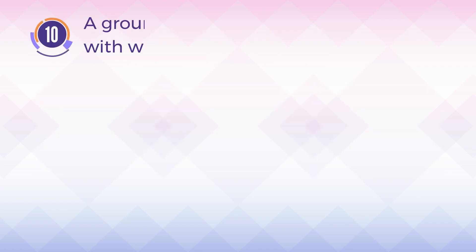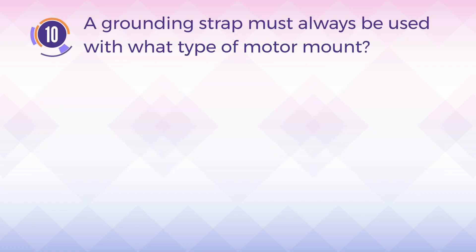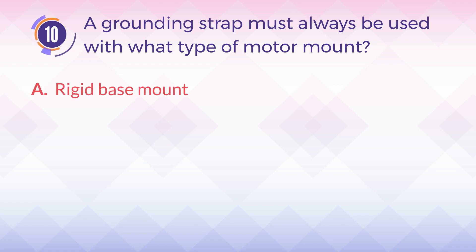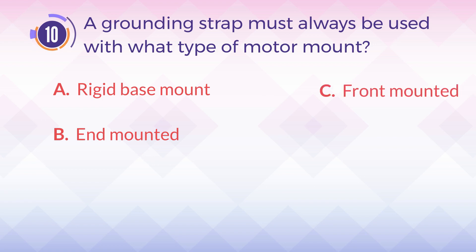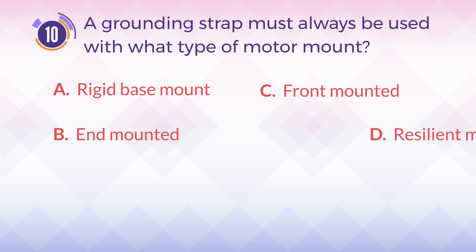Number 10. A grounding strap must always be used with what type of motor mount? A. Rigid base mount. B. End mounted. C. Front mounted. D. Resilient mounted.